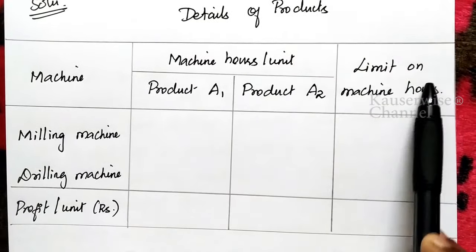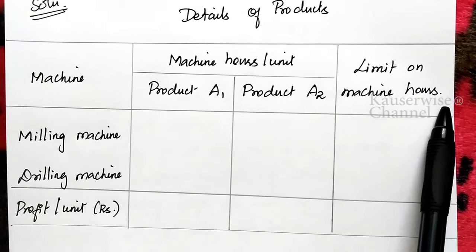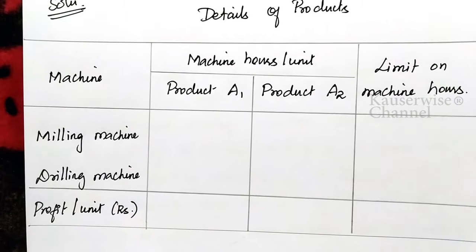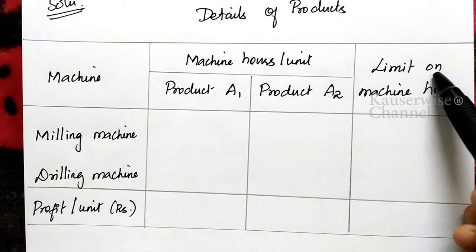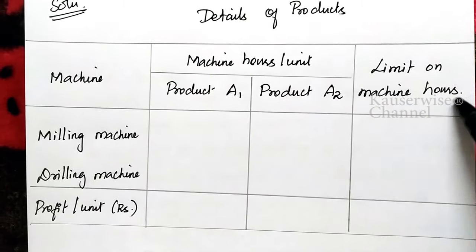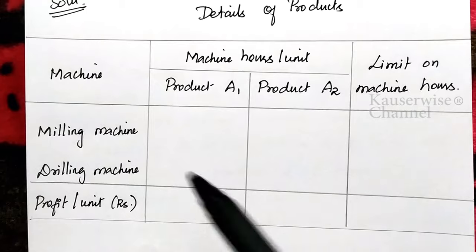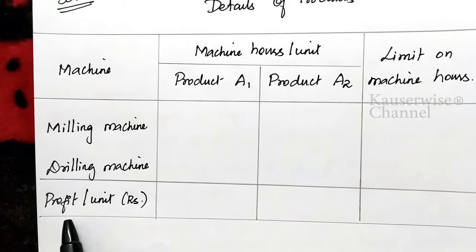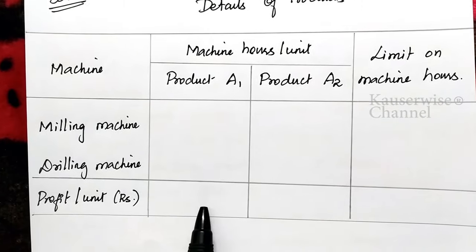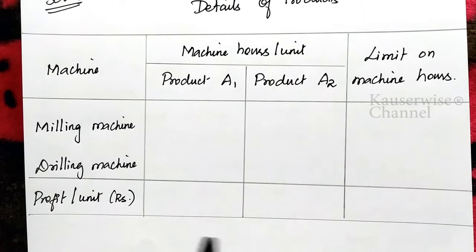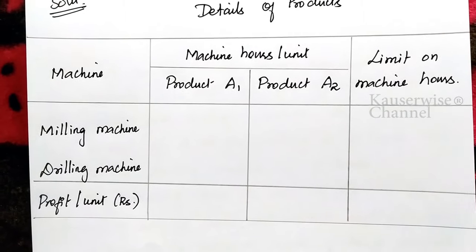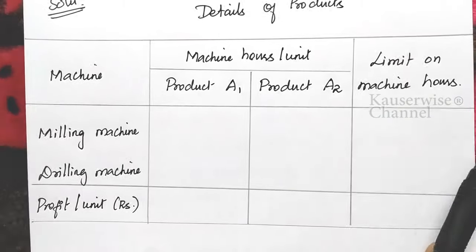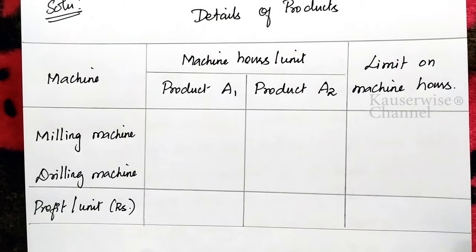The next one is the limit of machine hours — for each machine, the available duration is also given in the problem. And finally, the profit per unit for product A1 and product A2 is also given. Based on that, first we need to construct a tabular column, and with that you can easily formulate an LPP model.